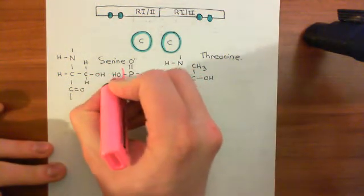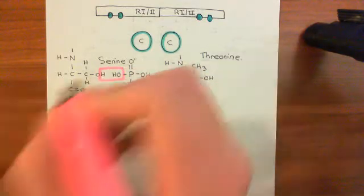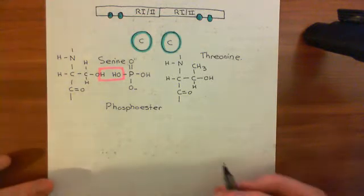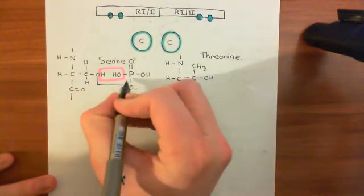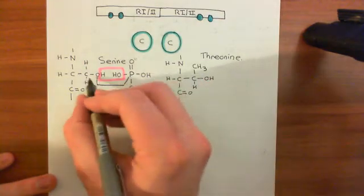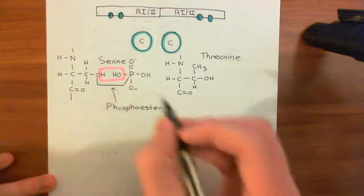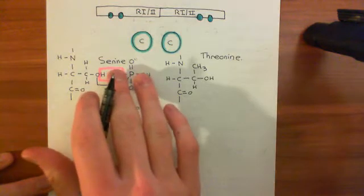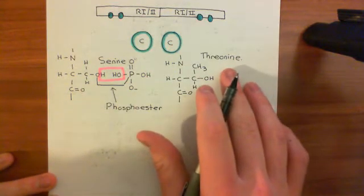We take the hydrogen off the alcohol of the phosphate group, combine them to make water, and then bind the oxygen of the serine or threonine to the phosphorus atom. That link is the phosphoester link, and we now have a phosphorylated serine residue — or a phosphorylated threonine residue if dealing with threonine. The catalytic subunits get these phosphate groups from ATP rather than from inorganic phosphate.